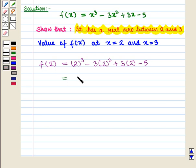This is equal to 8 - 3(4) + 6 - 5, which is equal to 8 - 12 + 6 - 5, and this is equal to -3.